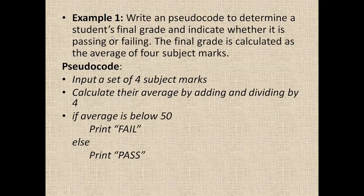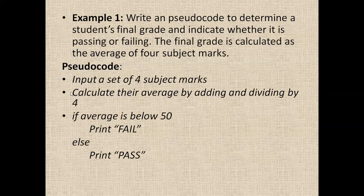One more example: write a pseudocode to determine a student's final grade and indicate whether it is a passing or failure. The final grade is calculated as the average of four subject marks. First, we need to take four subject marks as input from the user. After that, we need to calculate their average — first finding the addition of all four subjects, then dividing that sum by four to get the average.